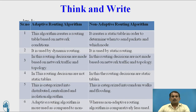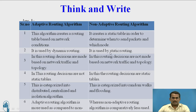There are a total of six differences. First, adaptive routing algorithm creates a routing table based on network condition, whereas non-adaptive creates a static table to determine which node to send the packet to. Second, adaptive is used by dynamic routing, while non-adaptive is used by static routing — in adaptive you can change data at any time, but in non-adaptive routing data cannot be changed while transmitting.